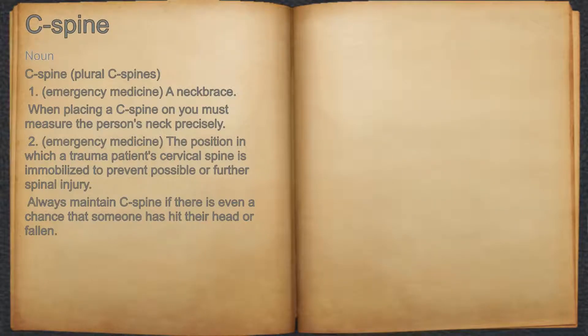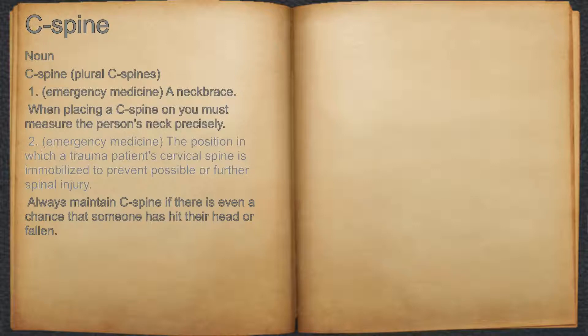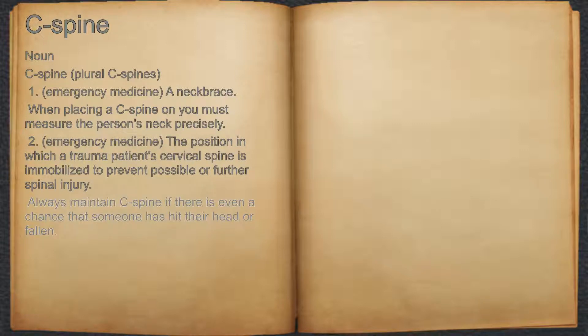C-spine. Noun. 1. Emergency medicine: a neck brace. For example, when placing a C-spine on, you must measure the person's neck precisely. 2. Emergency medicine: the position in which a trauma patient's cervical spine is immobilized to prevent possible or further spinal injury. For example, always maintain C-spine if there is even a chance that someone has hit their head or fallen.